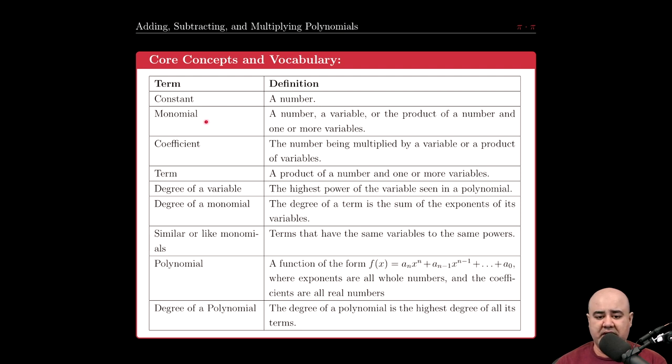A monomial is going to be invariably just a single term. A single term really means formally that it's a number, a variable, or a product of a number and one or more variables.